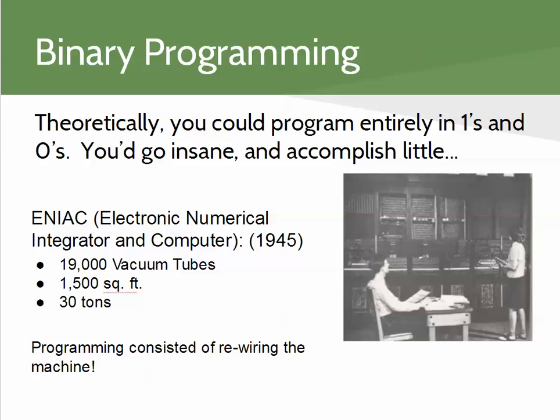Programming the ENIAC — the difference between that hardware and the speed of what we see today is dramatic. What we don't often appreciate is that the change in the way we write programs has grown up and changed almost in the same magnitude as the speed and size have changed. Programming these machines literally meant rewiring the machine — rewiring the vacuum tubes together so they would perform some different computation. That's something we clearly don't do anymore.